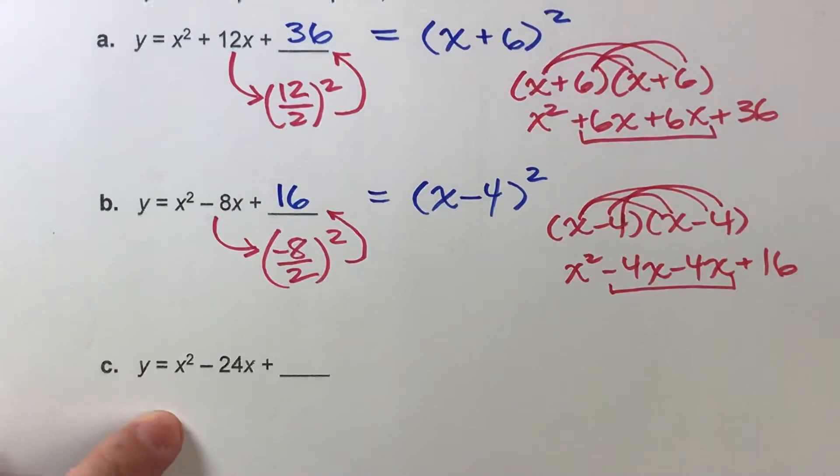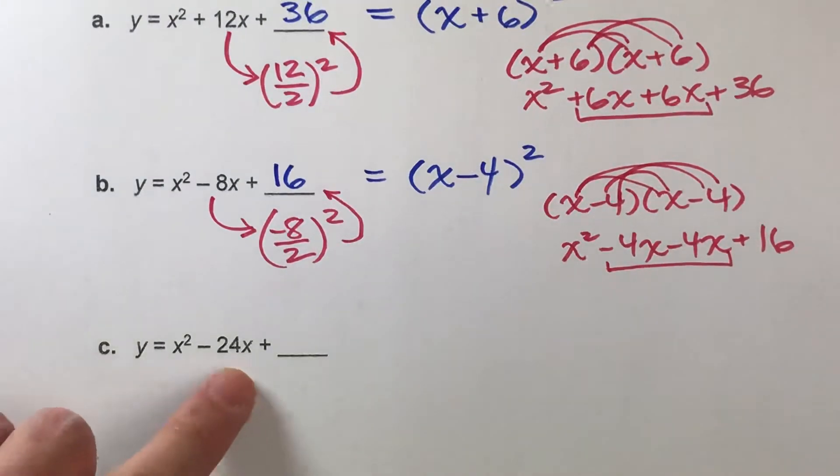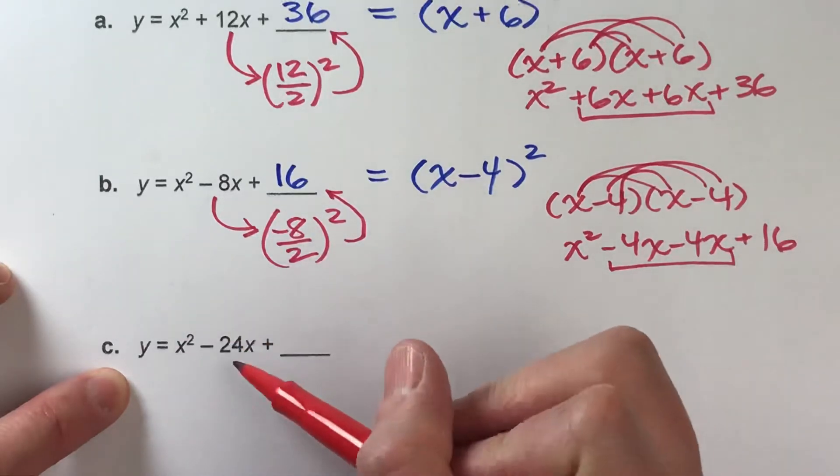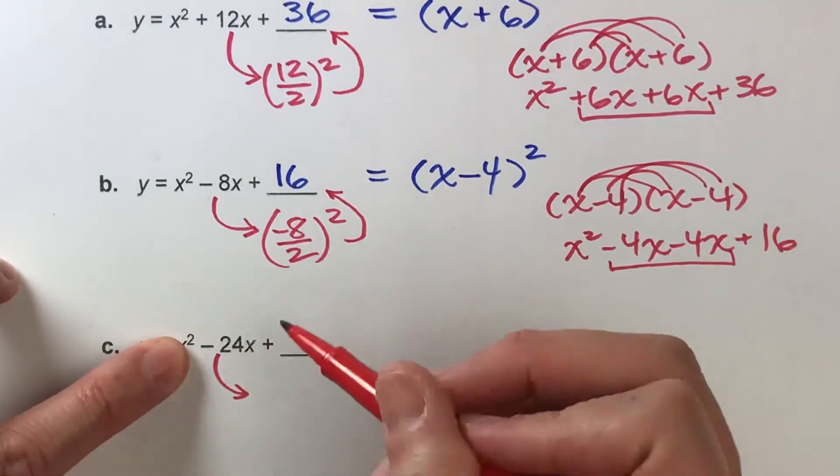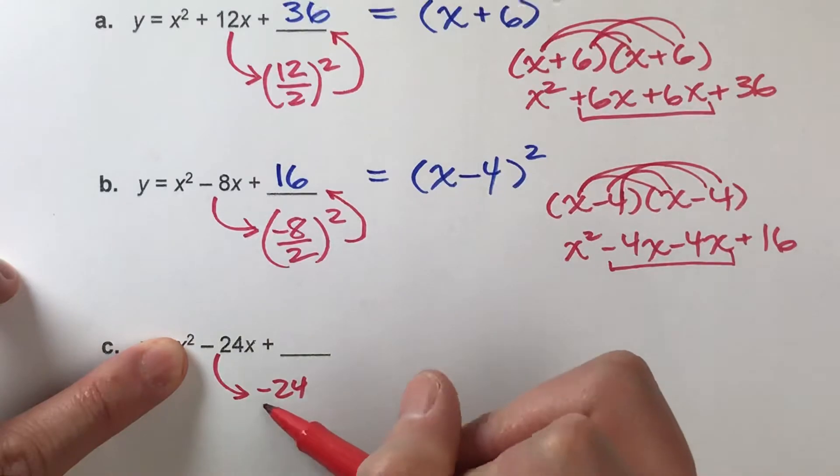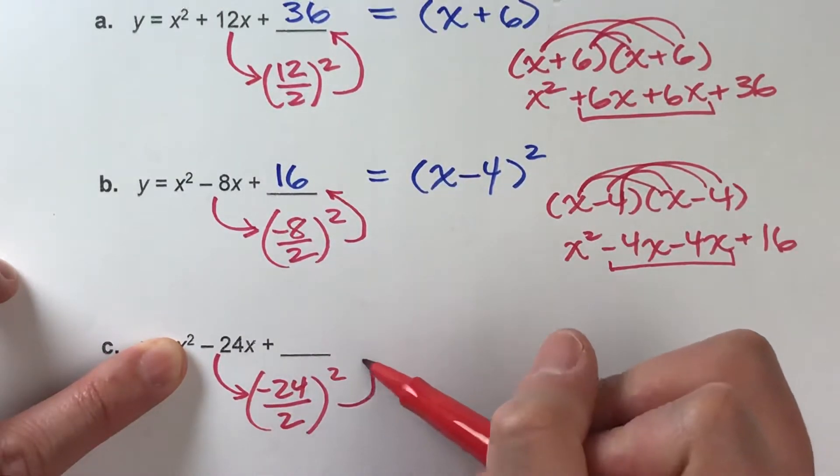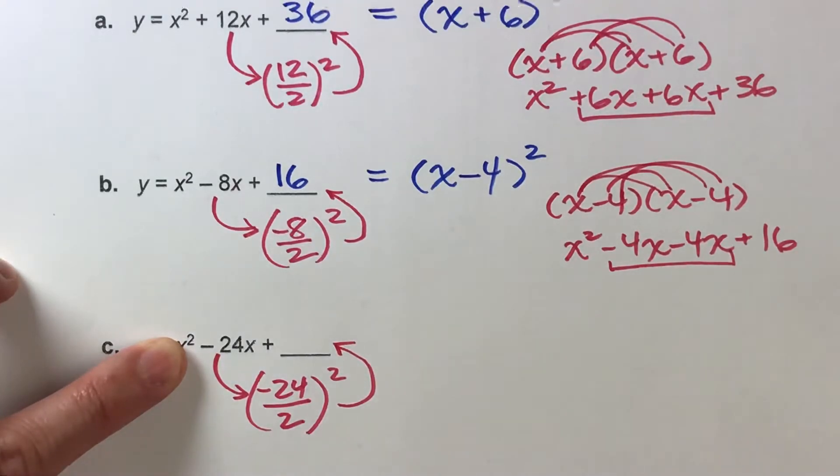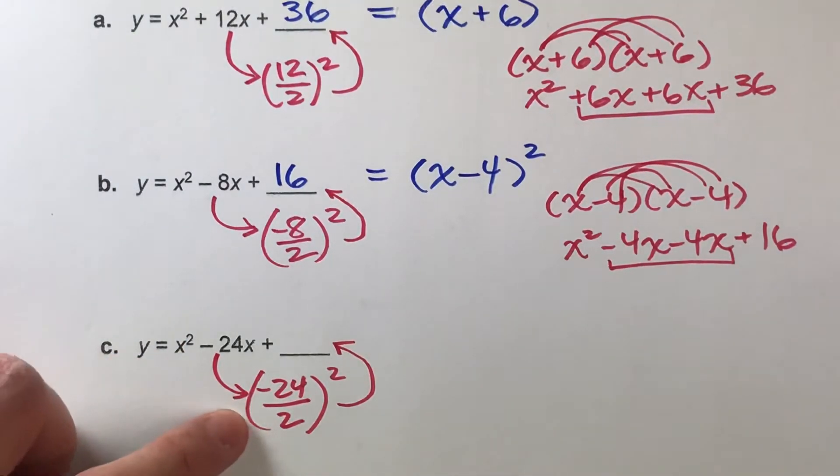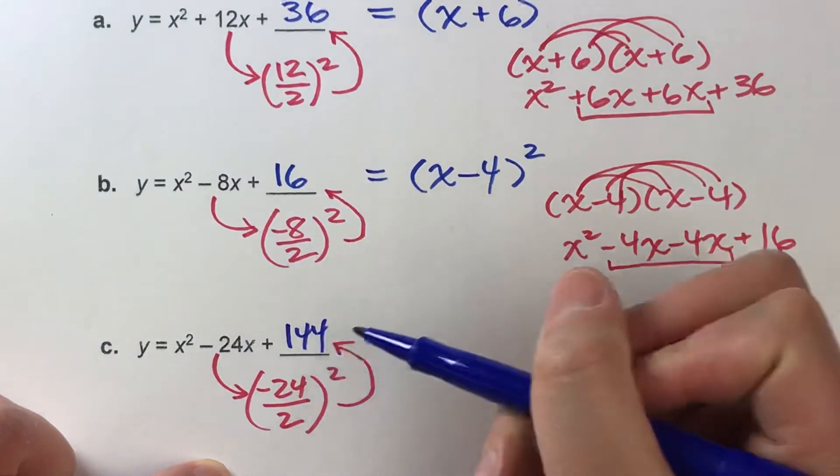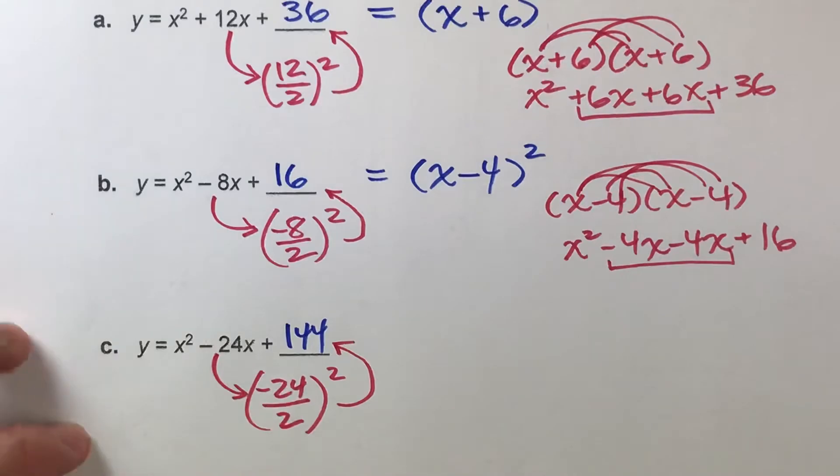Here we go. x squared minus 24x plus what will make this a perfect square? Well, again, let's use our formula. We'll take the number next to x, divide it by 2, and then square it. And that should get us that third term. Negative 24 divided by 2 is negative 12. Negative 12 squared is 144. So there is our third term.